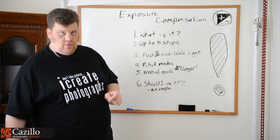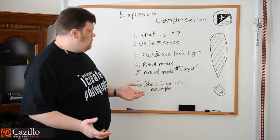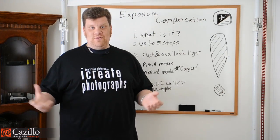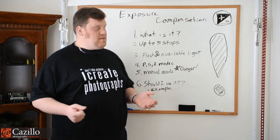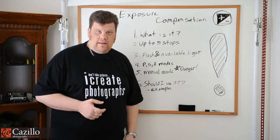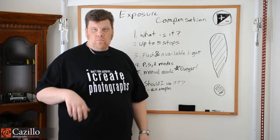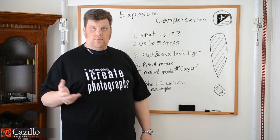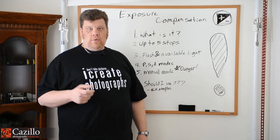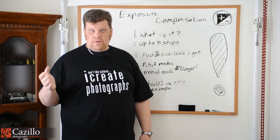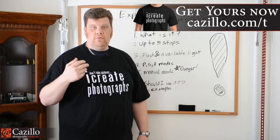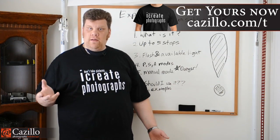So that gives you a general sense. Basically, if you hit that button — which is what it looks like on a Nikon camera — it will either increase or decrease your exposure. If you dial it in by one stop it will increase your exposure. If you dial it under by a stop it's going to decrease it. Simple as that.